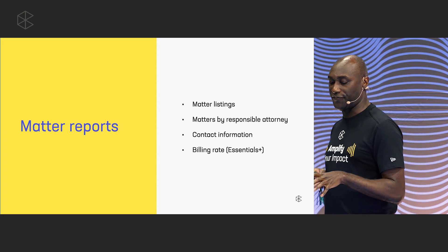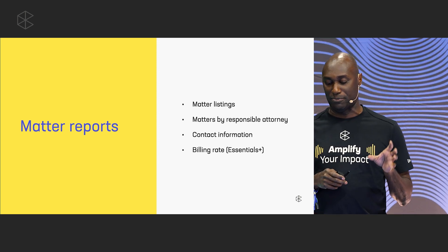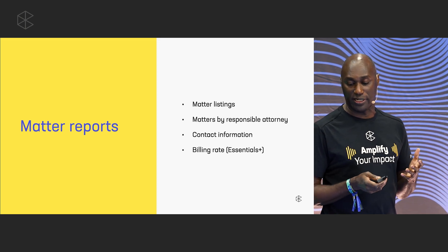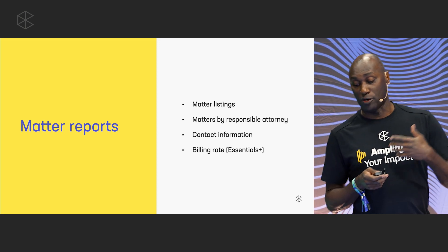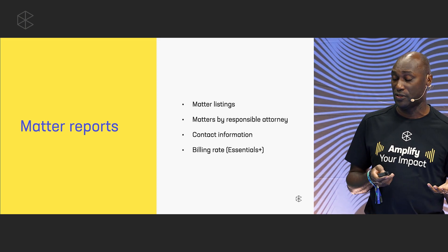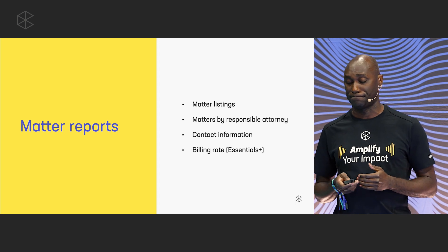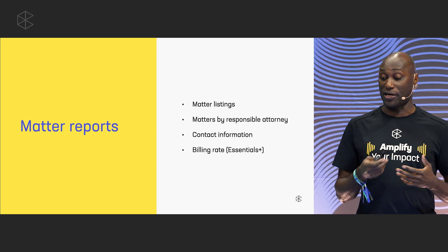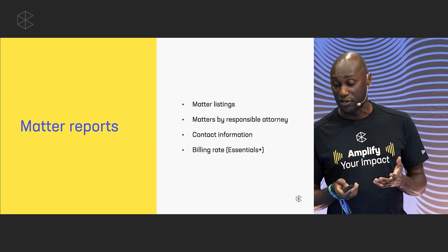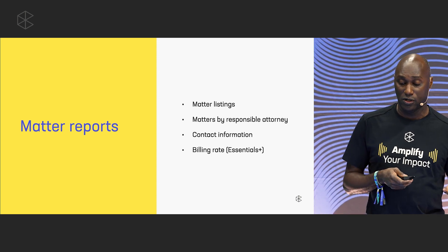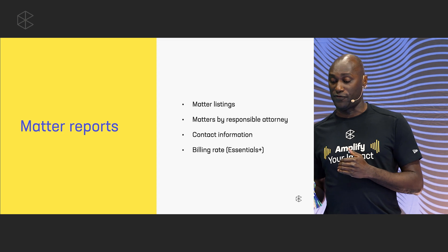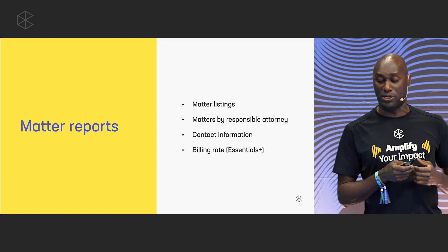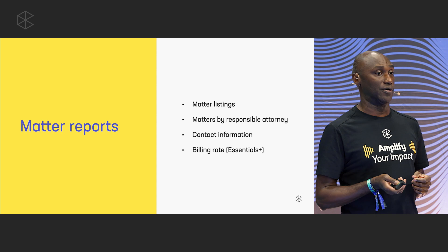That's where matter reports can come in handy. Our matter reports give firms a detailed view of clients and matters. To start answering these questions, Emma's firm might generate reports like the Billing Rate report, Productivity by Client, or the Revenue report. These will help as starting points — are certain practice areas making Emma's firm more money through custom billing rates, or is Emma's firm making more revenue from a specific practice area? So let's take a look at the Billing Rate report that was released earlier this year.